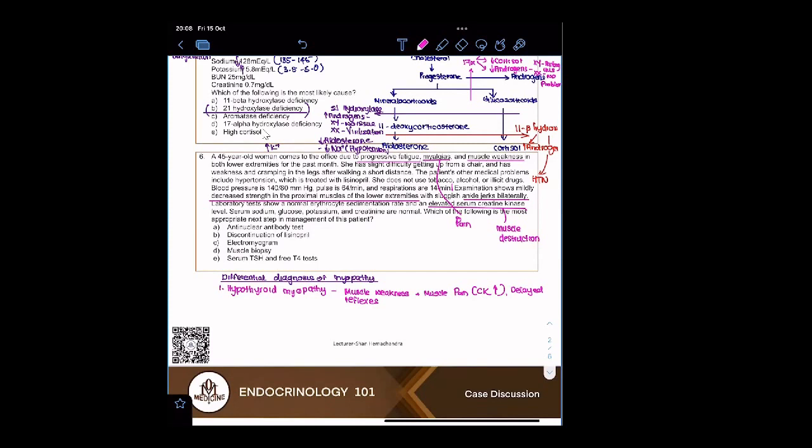When you see the word hypothyroid, when you have muscle weakness and muscle pain, the next thing that should come to your head is glucocorticoid myopathy. In this, if the glucocorticoids are high, there is muscle weakness, no pain, CK is normal.